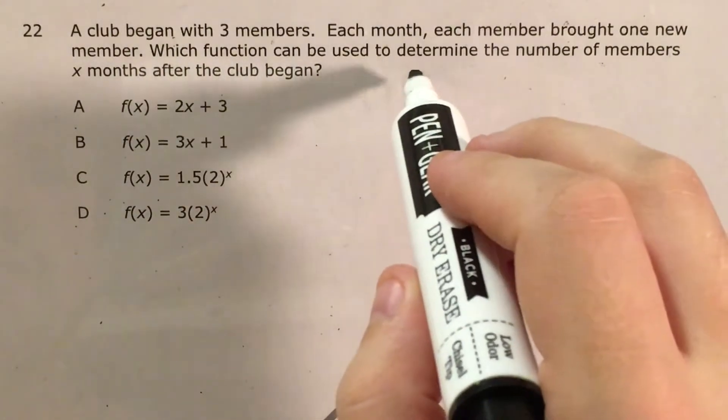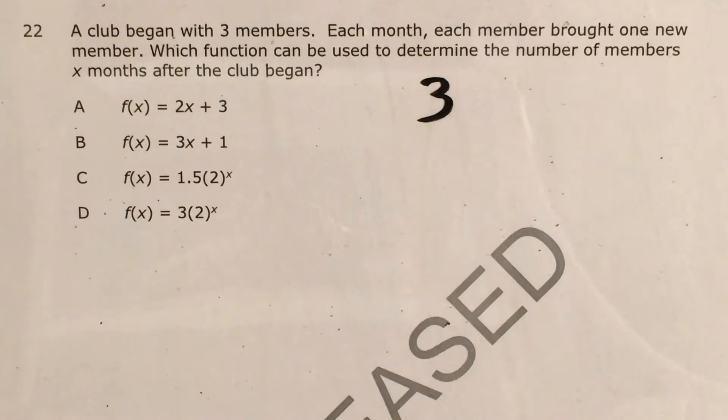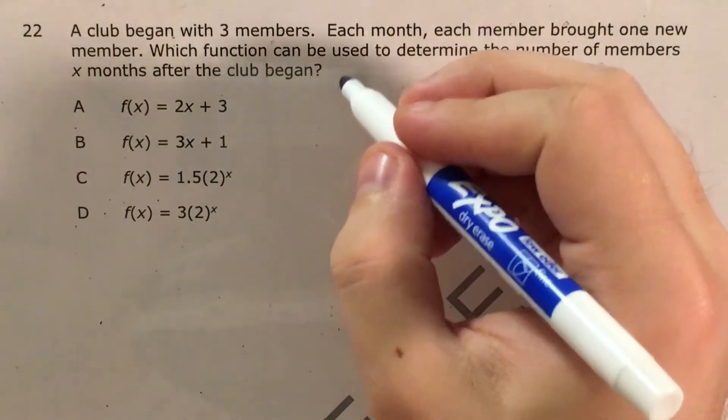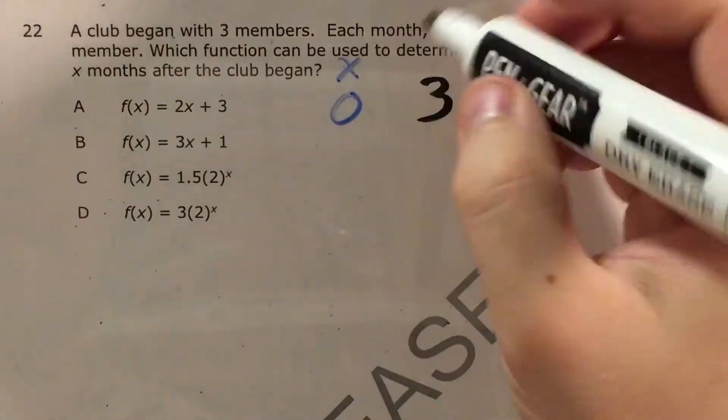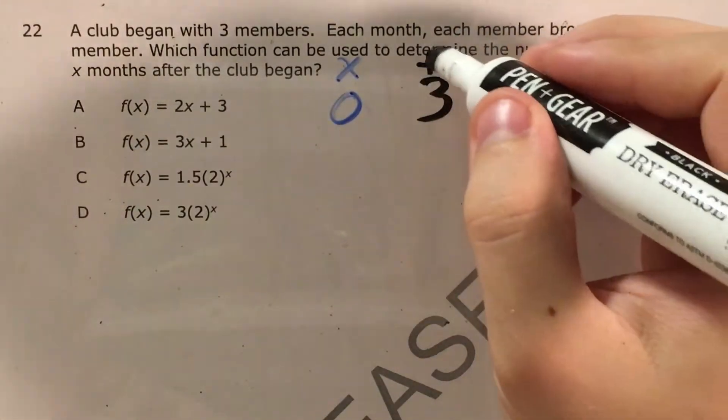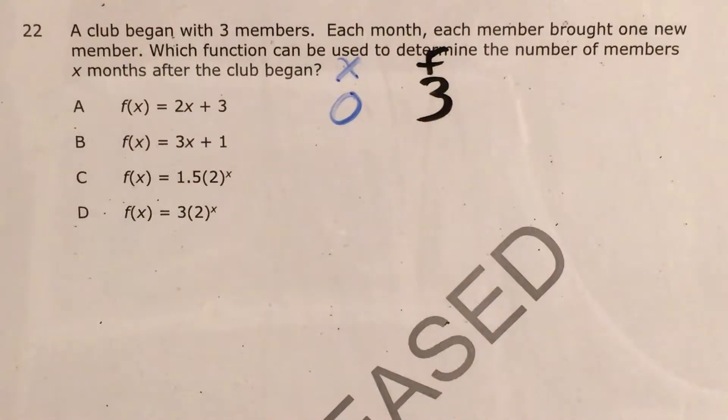If we start with three members, and if this is x months after the club began, my x would be zero. So it's zero months. My f, my number of members, is three.